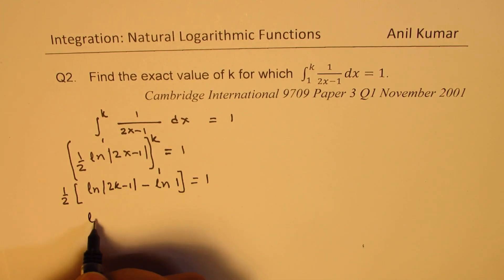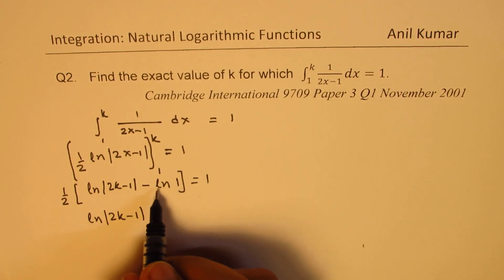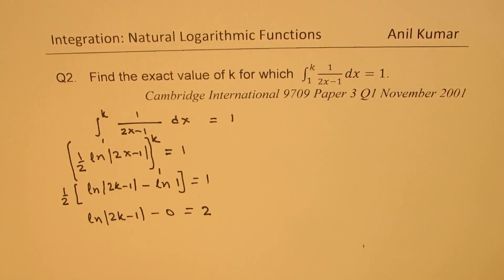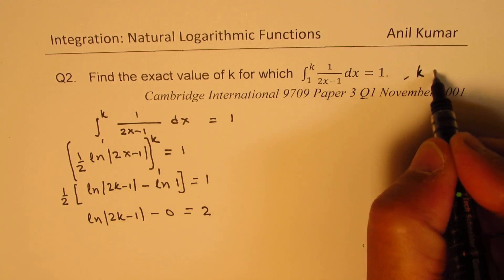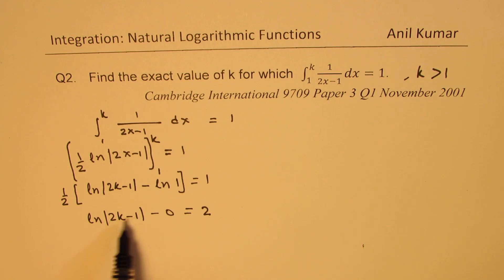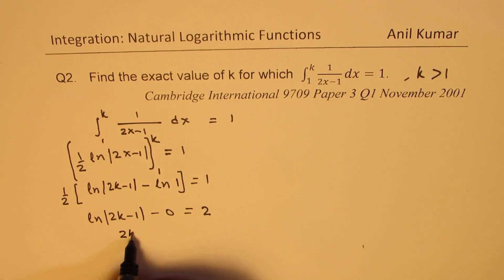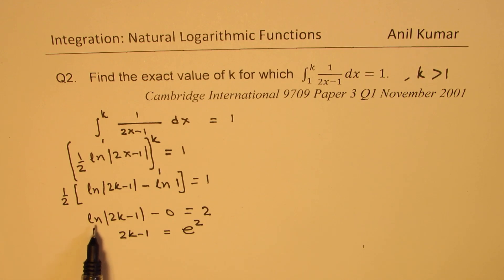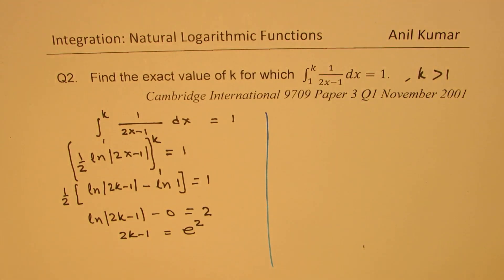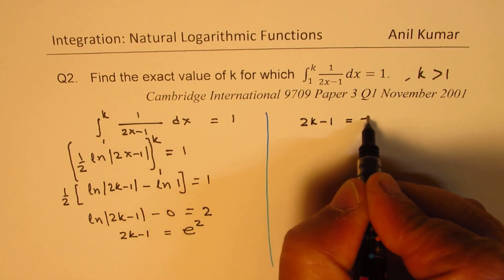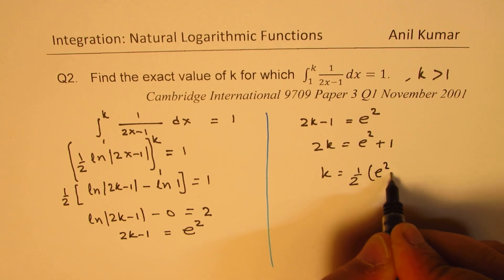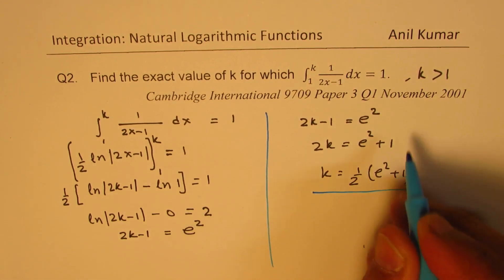Multiplying both sides by 2: ln(2k minus 1) equals 2. Taking k as greater than 1, so (2k minus 1) is positive, we can write 2k minus 1 equals e squared. Solving: 2k equals e squared plus 1, therefore k equals one-half of (e squared plus 1). That is the exact value of k.